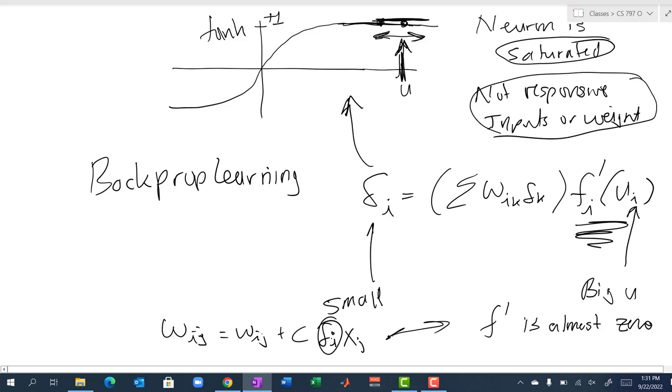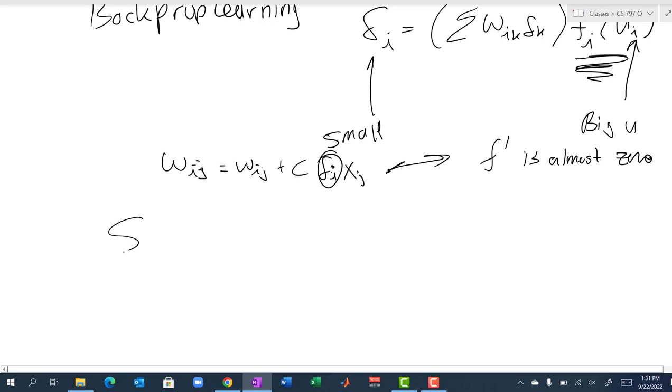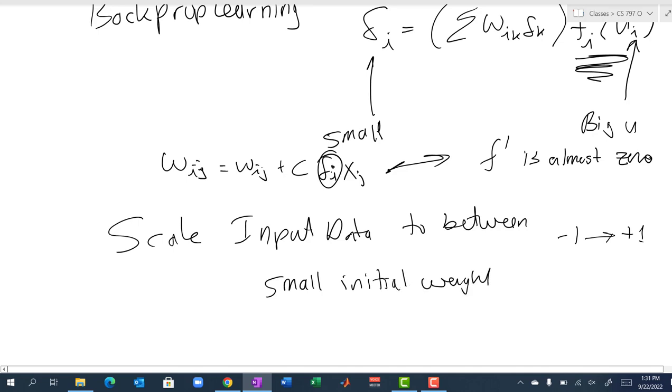We're essentially stuck, and the solution to this is to scale the input data to be between plus and minus one and then use small initial weights.